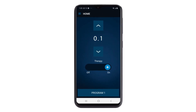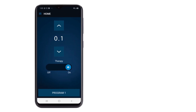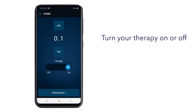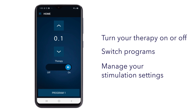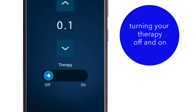Adjustments to your therapy are made on this screen. You can use your Smart Programmer to turn your therapy on or off, switch programs, or manage your stimulation settings. Remember, your Programmer may look different. To turn the therapy off, slide the arrow to the left.